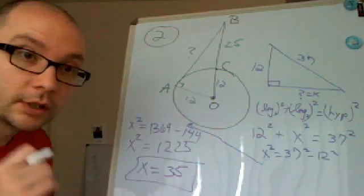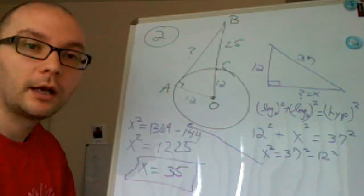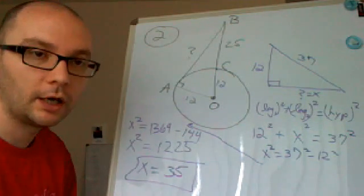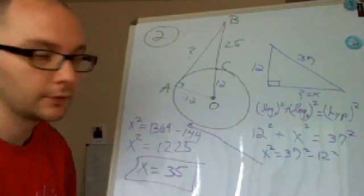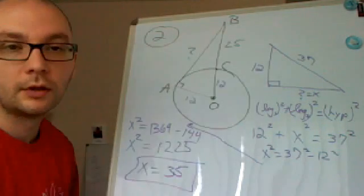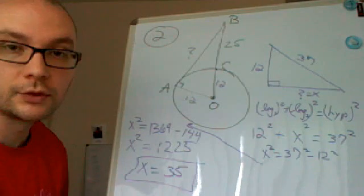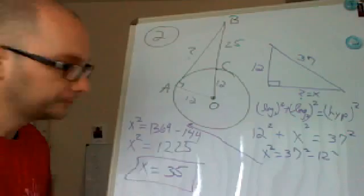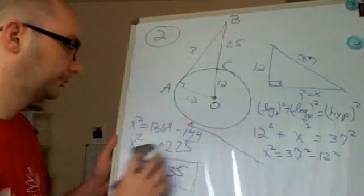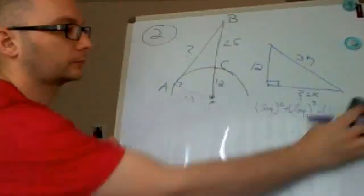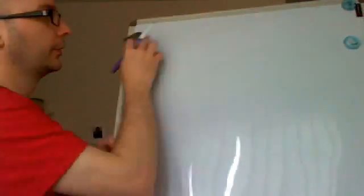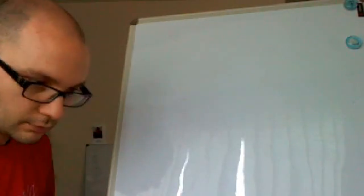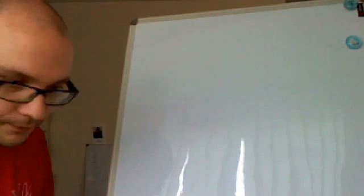Again, the importance is that a tangent intersects the circle at a point. And at that point, it creates a right triangle or a right angle from the radius and the tangent. Radius, tangent, that creates a right angle. And now we just convert it into a right triangle and use our right triangle theorems. Hopefully this is working. You're able to see this. This is the first time I tried this board. I'm going to try it this time.